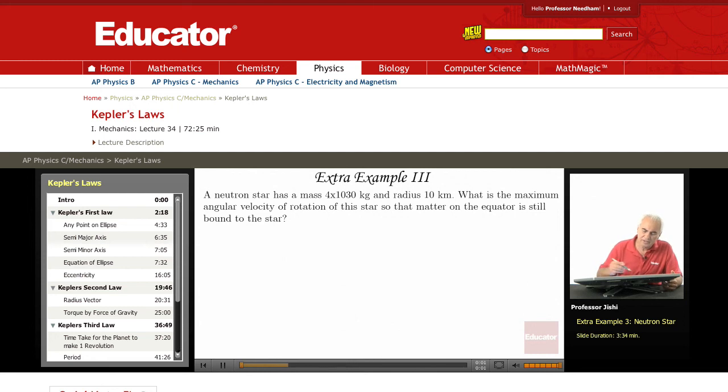We have a neutron star. We're given the mass. This is, of course, 10 to the power of 30. So the mass is 4 times 10 to the 30 kilograms. We know the radius, 10 kilometers. That's a neutron star, so they're very dense.